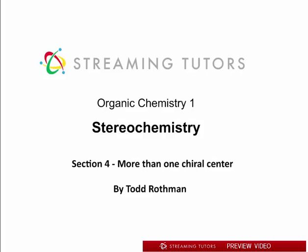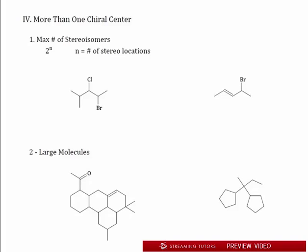Let's get started. When you have more than one chiral center, this actually extends beyond chiral to stereocenters. We're not just talking about chirality — we're talking about stereo in general, which means cis/trans and R/S. Cis/trans are one type of stereo potential, and R/S are another. For every stereo location you always have two possibilities, so the formula is 2 to the n, where n is the number of stereo locations.